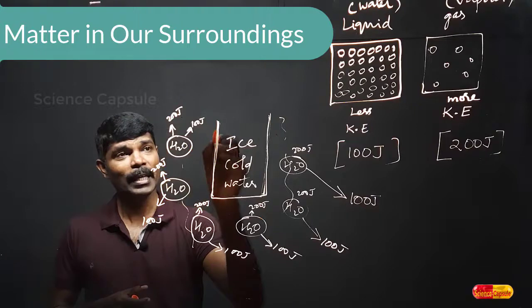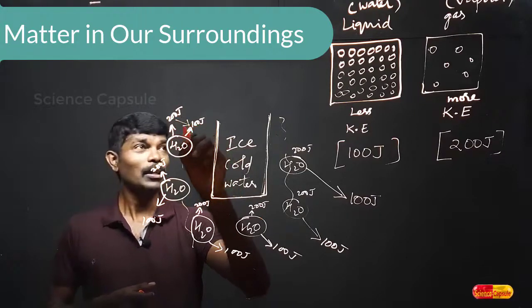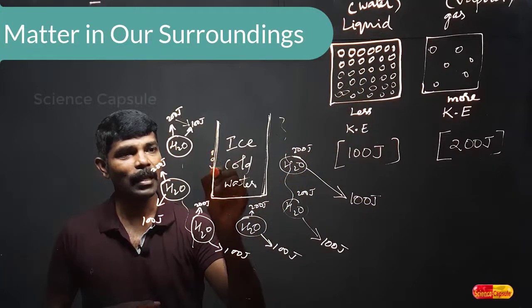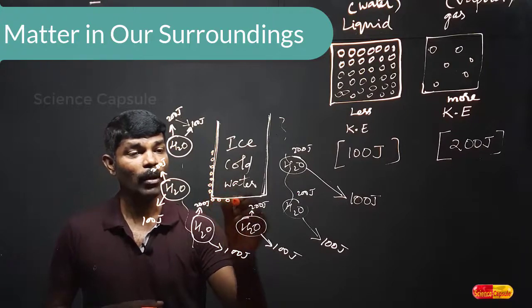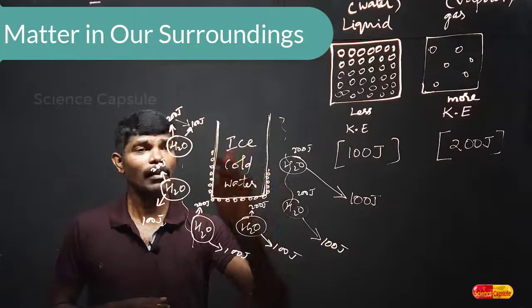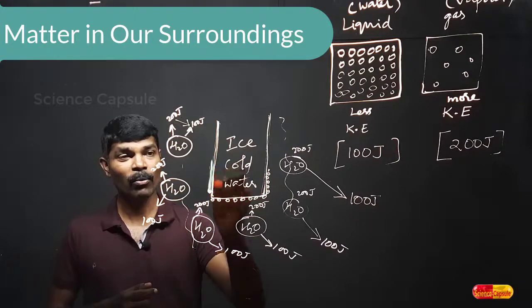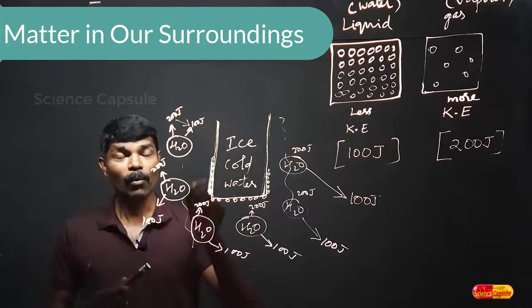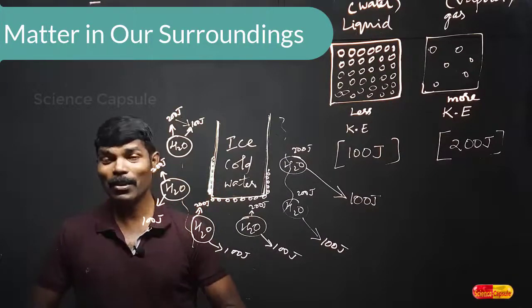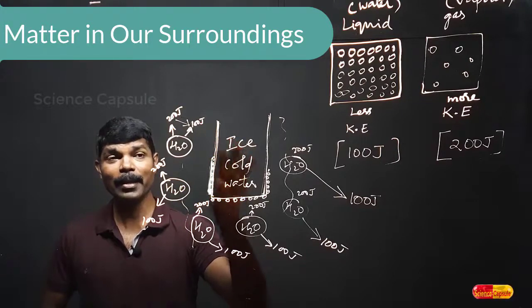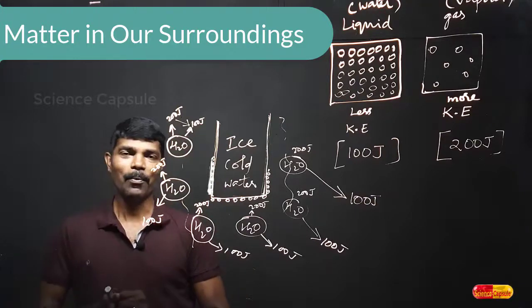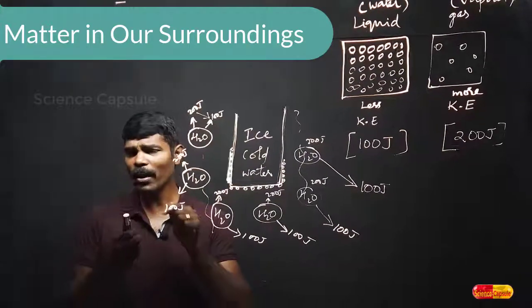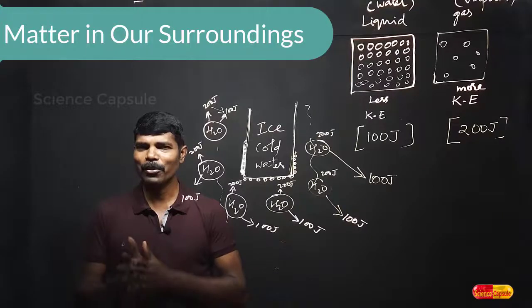When the water vapor loses energy — from 200 down to 100 joules — it changes to liquid state. This is how we see the deposition and formation of water droplets around the container. This process continues until the temperature of the contents inside the container and the outside temperature become balanced. That is why we see water droplets forming on the surface of a container holding ice cold water.